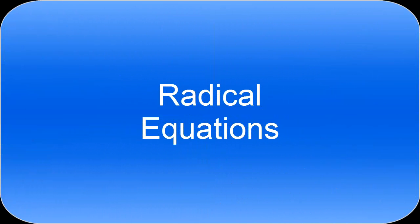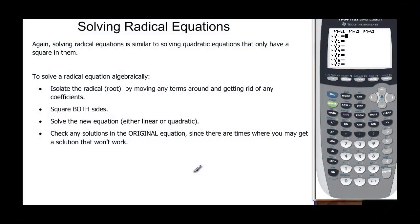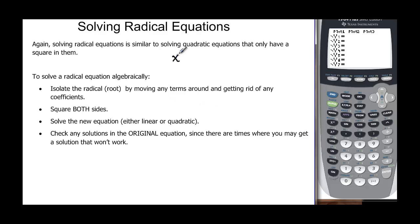In this video we'll talk about solving radical equations. Solving radical equations are similar to solving quadratic equations that have only a square in them. Just like when we had x squared equal to k, we took the square root of both sides. We have a square and a square root, which are inverses that cancel each other out.